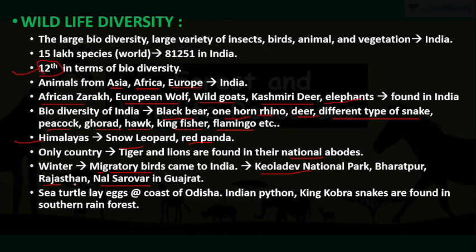We also have sea turtles on the coast of Odisha that lay their eggs there. And last but not the least, Indian python, king cobra and snakes are found in the southern rainforests. These are just a small list of our wildlife diversity.